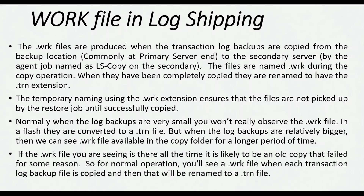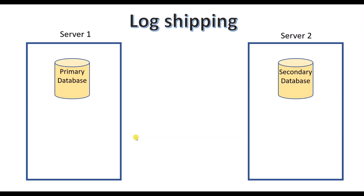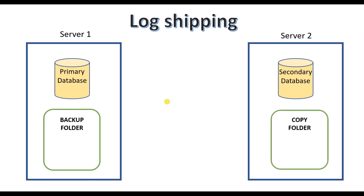Sometimes you may see a .wrk file that is present in your copy folder all the time — that might be an old copy that has failed for some reason. For example, if I have configured log shipping between two servers, my primary database is in Server 1 and secondary database is in Server 2. The backup folder will be present in Server 1 and the copy folder will be present in Server 2. You can also have the backup folder and copy folder in a shared folder as per your requirement.